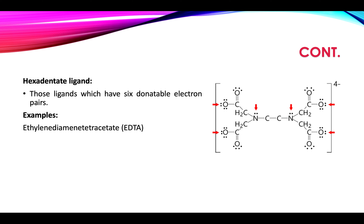Hexadentate ligands — as the name implies — are those ligands which have six donatable electron pairs. A famous example is ethylenediamine tetraacetate, abbreviated EDTA. Its structure has six binding sites: four terminal oxygen atoms and two nitrogen atoms with lone pairs. In six sites, EDTA can form bonds with the metal atom.